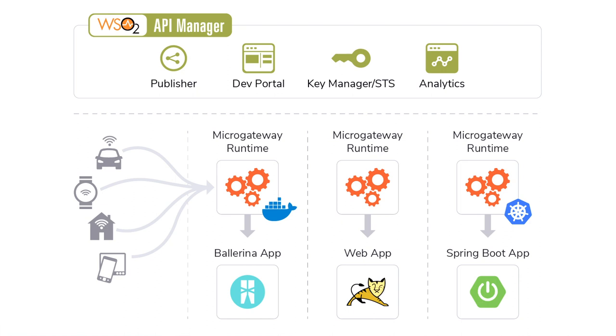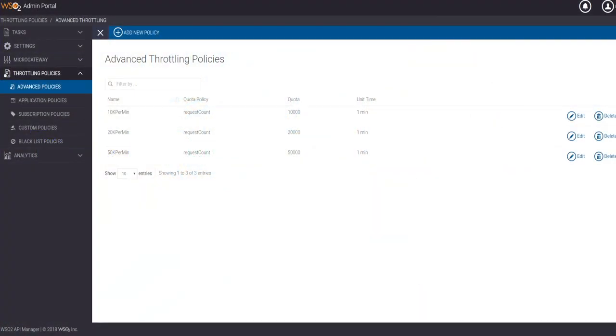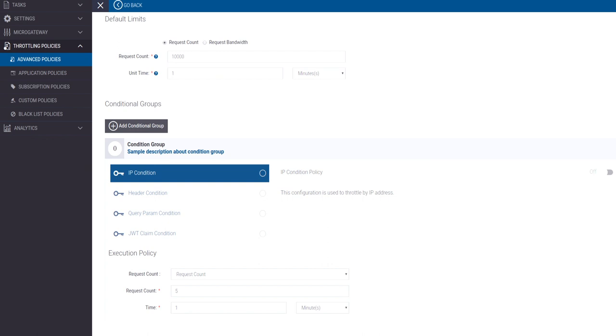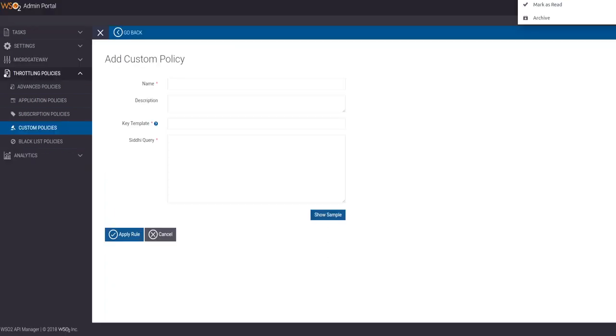The API Gateway also comes in the flavor of API Micro Gateways, which can be deployed in microservice architectures. The Key Manager component, also called an STS (Security Token Service), issues secure tokens for consuming devices and applications. It assists the gateway in performing security operations such as validation and issuance of tokens. The Traffic Manager component is primarily focused on rate limiting, applying advanced rate limiting policies on various users, applications, IP addresses, and device types across your API gateway.